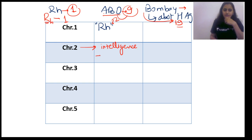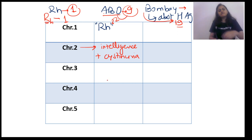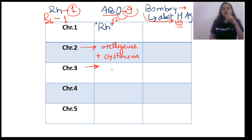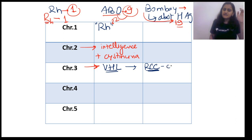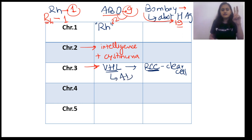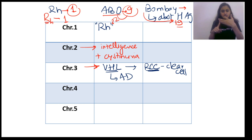Chromosome 3: VHL — von Hippel-Lindau disease — a three-lettered disease. VHL is associated with renal cell carcinoma (RCC), specifically clear cell RCC. Both VHL and RCC are chromosome 3. Inheritance of VHL is autosomal dominant. All neurocutaneous syndromes — neurofibromatosis, VHL, tuberous sclerosis — are autosomal dominant. Sturge-Weber syndrome is sporadic. Ataxia telangiectasia and Bloom syndrome are autosomal recessive.